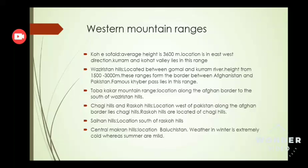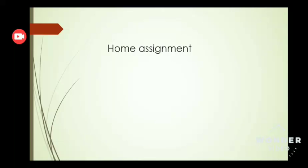Last is the Central Makran Hills, located in Balochistan. The weather in winter is extremely cold, whereas some areas are mild. So we have discussed in detail three types of mountain ranges: northern, central, and western mountain ranges, and we have discussed in detail their height, their direction, and where they are located.